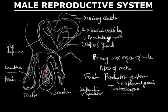This male hormone, testosterone, is responsible for developing certain secondary sexual characteristics of the male. So, initially, we have testes, which is the primary sex organ.